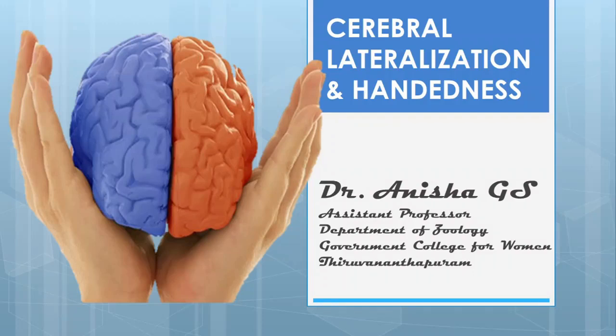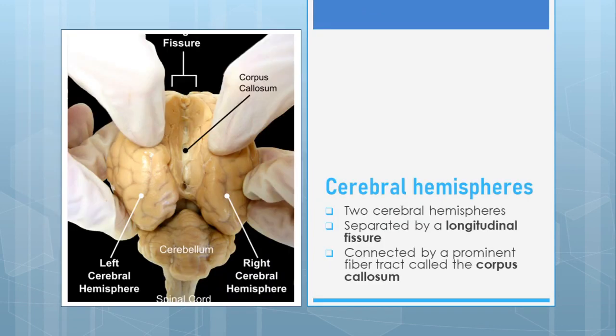Dear students, our today's topic of discussion is cerebral lateralization and handedness. As we have studied in the previous sessions, the cerebrum of the brain is separated in the cortical region into two hemispheres — the right cerebral hemisphere and left cerebral hemisphere — by a longitudinal fissure. In the medullary region, the hemispheres are connected by a prominent fiber tract called the corpus callosum.